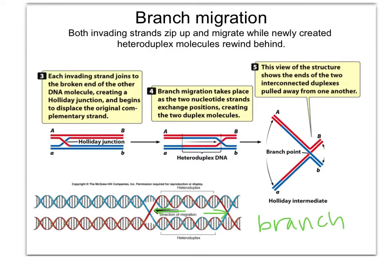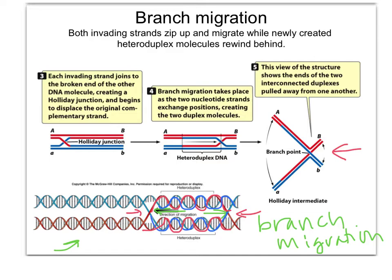Branch migration happens and increases the size of this heteroduplex. The heteroduplex is the area where the red strand has invaded the blue, and the blue strand has invaded the red. Then we look at where they're still connected — that's the branch point. Here they're showing us a stick method, and down here with the actual helices, both representing the same thing. So here's our heteroduplex formation and branch migration. At this point, we still haven't dealt with any crossing over — we've just had strand invasion and branch migration.